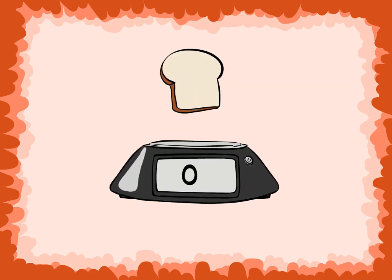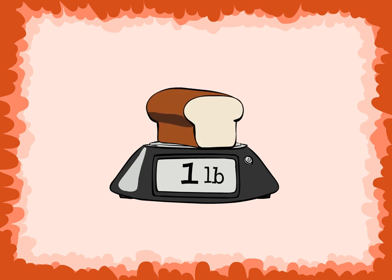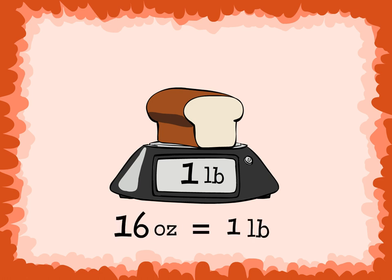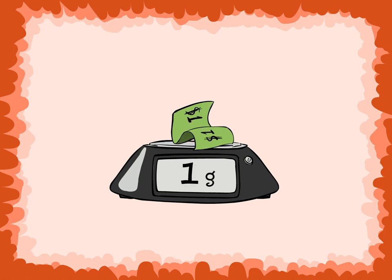A piece of bread weighs about one ounce. Ounces are used to measure light objects. A loaf of bread weighs about one pound. Pounds are used to measure heavier objects. There are sixteen ounces in one pound. A dollar bill weighs about one gram. Grams are also used to measure light objects.